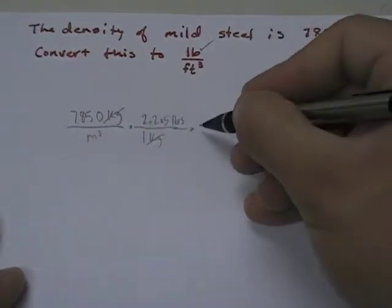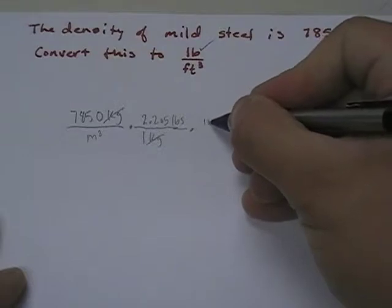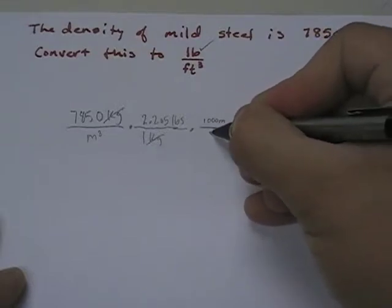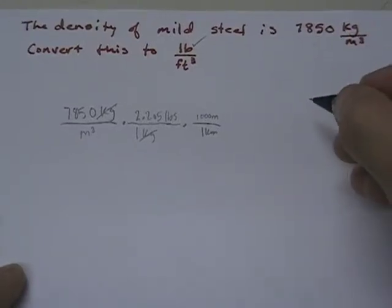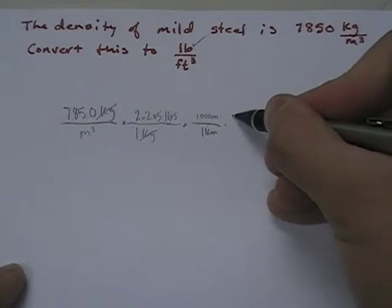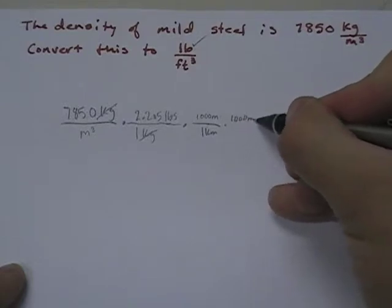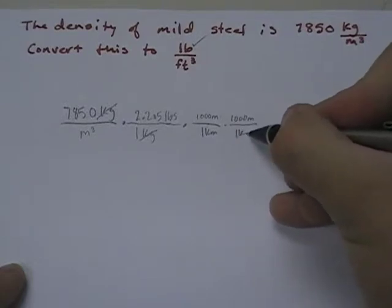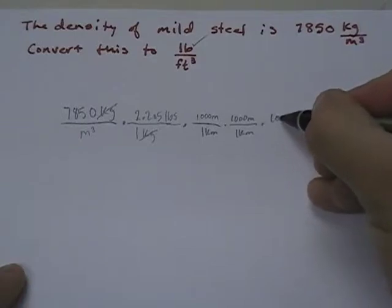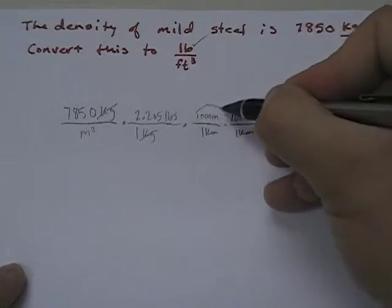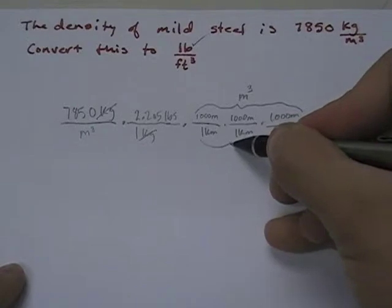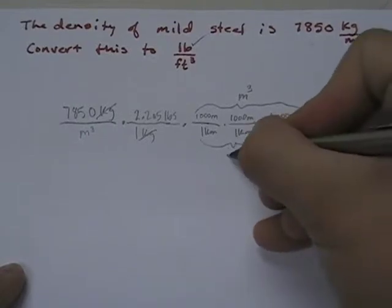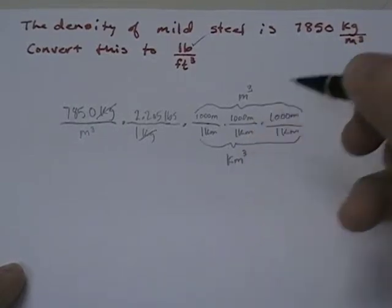What do I know about cubic meters? Well, I know that 1,000 meters makes one kilometer. And because this is cubed, I have to do it three times. So 1,000 meters, one kilometer. 1,000 meters, one kilometer. And so what I end up with is meters cubed on top and kilometers cubed on the bottom.